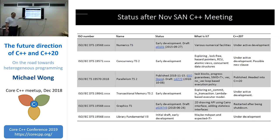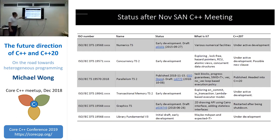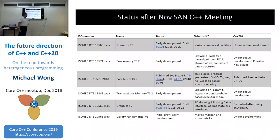I don't think we'll be able to put hazard pointers and RCU in any earlier than a TS, also because of their high complexity — people want to see them as a TS first. Graphics TS: how many people care about having a basic graphics capability in C++? It got withdrawn — not just because of API design issues but also because the stateful interface approach has been known to be problematic for about a decade. There was enough contention that it was shut down.